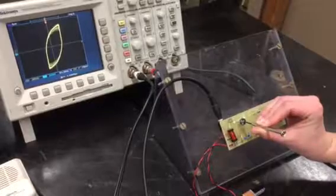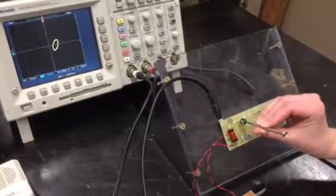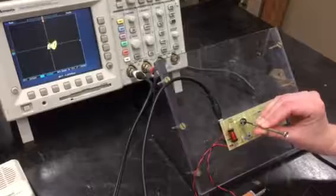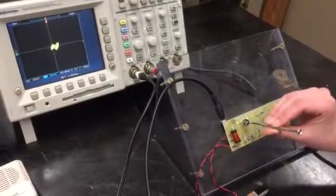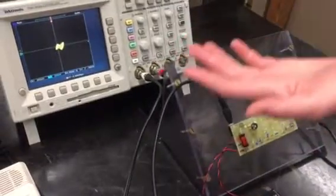So turn it to the right. We don't see any chaos. Move back left. And we're starting to see chaotic behavior but it's very small.